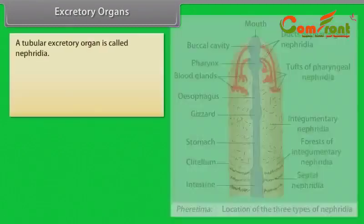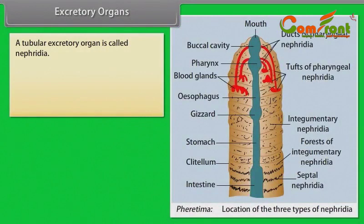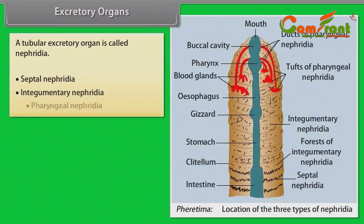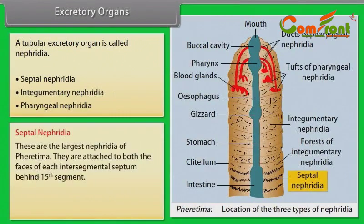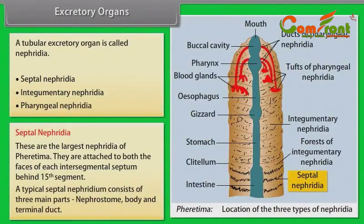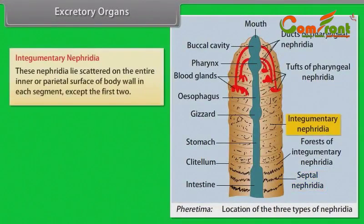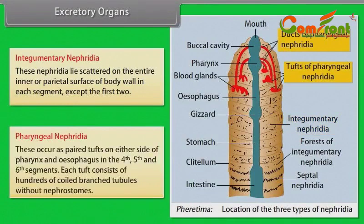Excretory Organs: A tubular excretory organ called nephridia is of three types: septal, integumentary and pharyngeal. Septal nephridia are the largest, attached to both faces of each intersegmental septum behind the 15th segment, consisting of nephrostome, body and terminal duct. Integumentary nephridia lie scattered on the inner parietal surface of the body wall in each segment except the first two. Pharyngeal nephridia occur as paired tufts on either side of the pharynx and oesophagus in the 4th, 5th and 6th segments, each tuft consisting of hundreds of coiled branched tubules without nephrostomes.